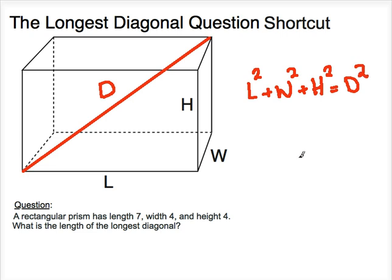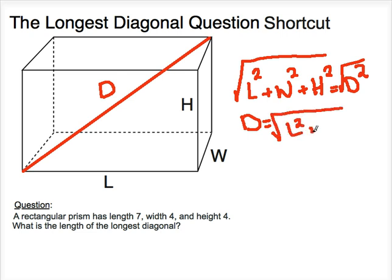Now this looks very similar to the Pythagorean theorem except there's an extra dimension here, H. So to find D, all you have to do is take the square root of both sides. And now we have D equals square root of L squared plus W squared plus H squared. And that's it. Now this is our formula for finding the longest diagonal of a rectangular prism. So I'm going to put a box around this.